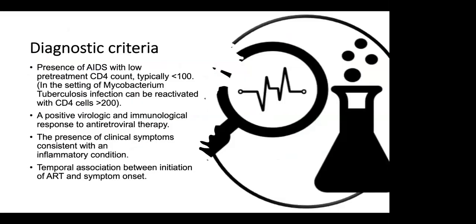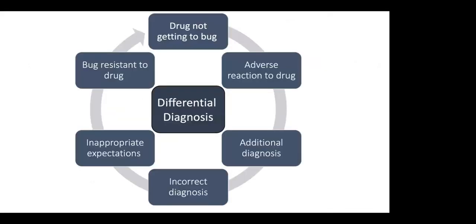Diagnostic criteria of IRIS include: presence of AIDS or low CD4 count - typically less than 100 - a positive virological or immunological response to ARVs, the presence of clinical symptoms consistent with an inflammatory condition, and temporal association between initiation of ARVs and symptom onset. The differential diagnosis could be drugs not getting to the bugs, adverse reaction to the drug, additional diagnosis, incorrect diagnosis, or inappropriate expectations of bugs being resistant to the drugs.